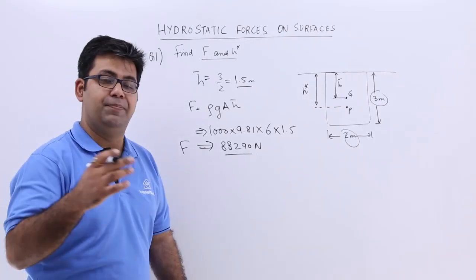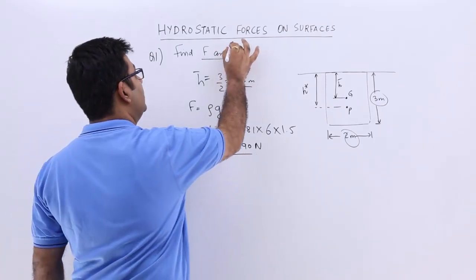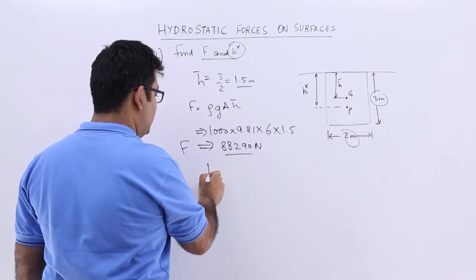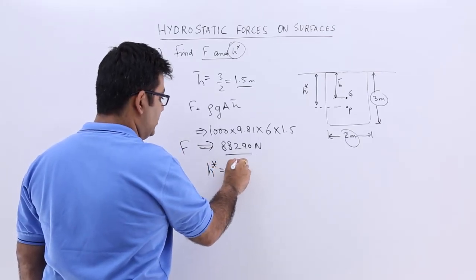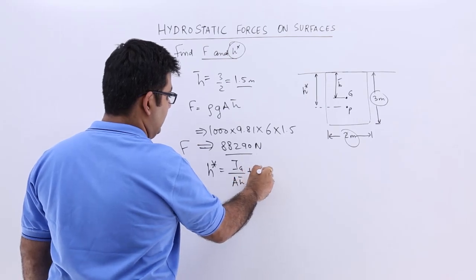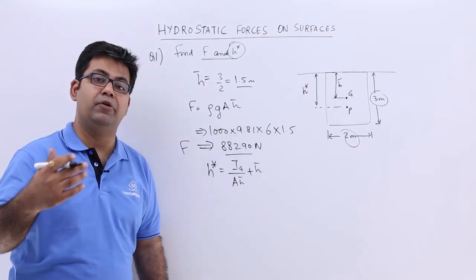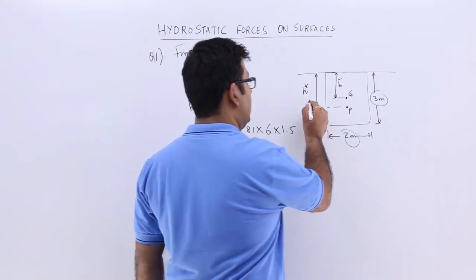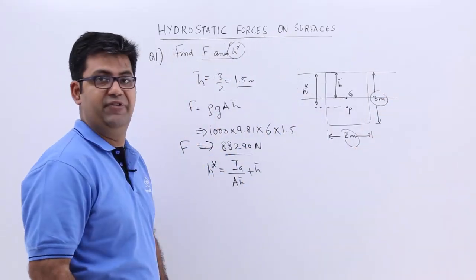Now to the next part where we find out the location of this center of pressure, so h star we know it is equal to ig upon A h bar plus h bar. So what is ig? ig is the moment of inertia about the centroid of this surface.